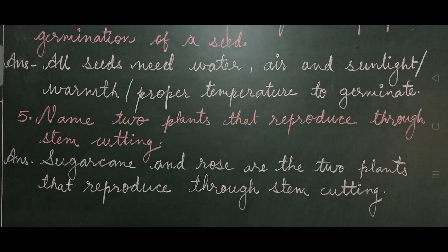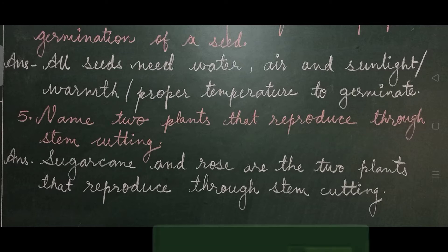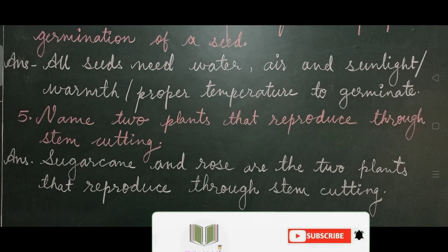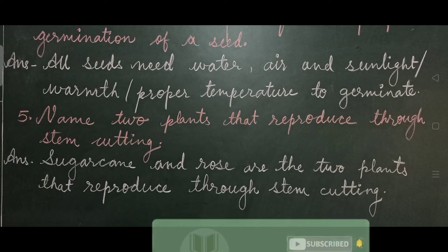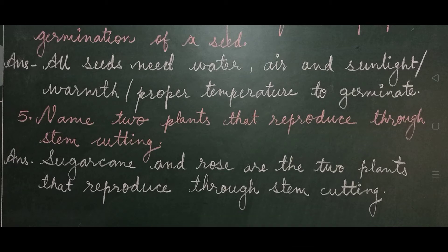Question number five: name two plants that reproduce through stem cutting. These are sugarcane and rose.